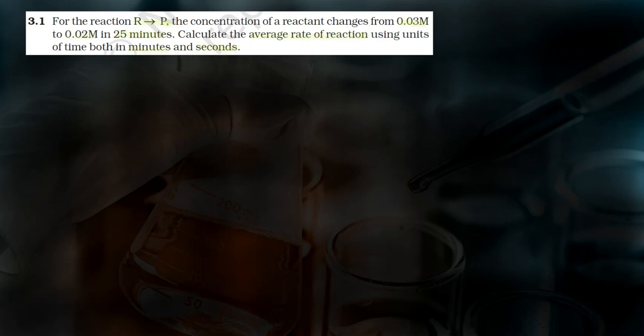First of all, let's take the reaction. The reaction given is R to P — R is for reactant and P is for product. At T equals to 0, the concentration of the reactant is 0.03 M.